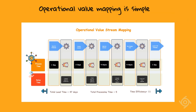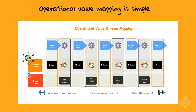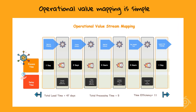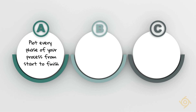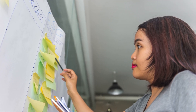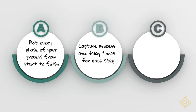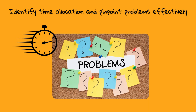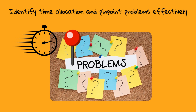Using the Operational Value Stream Mapping Template is straightforward. Step 1: map out each step involved in your process from start to finish, including all activities, even those that seem minor. Step 2: for each step, record the process time and delay time. This helps identify where time is spent and where bottlenecks occur.